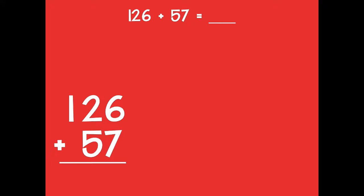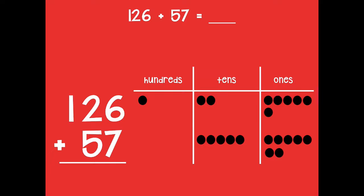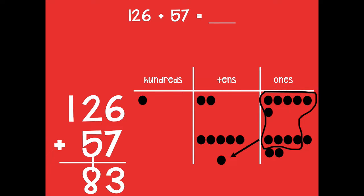Here we go: 126 is one hundred, two tens, and six ones; 57 is five tens and seven ones. Starting in the ones place — seven plus six is more than ten, so I bundle and compose a new ten. Now I have one new ten and three ones. In the tens place, there aren't enough tens to make a hundred: five plus two is seven, plus one more is eight. The hundreds place just has one hundred, so 126 plus 57 equals 183.